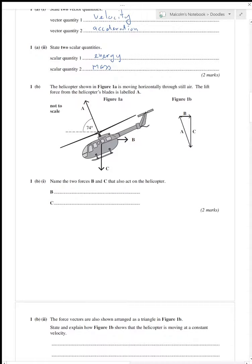This helicopter is moving horizontally through still air. The lift force is labeled A. Name the two forces B and C that also act. So B - it's moving horizontally - so B is going to be a drag force, and in particular it's going to be air resistance. And C acting downwards, got to be a little bit careful here. C is the weight of the helicopter, bearing in mind that gravity is not a force. Gravity causes a force. The name of the force is weight.